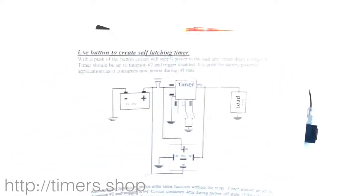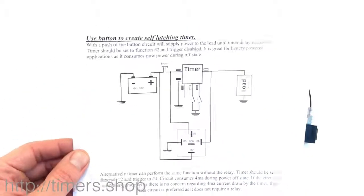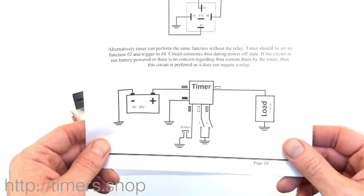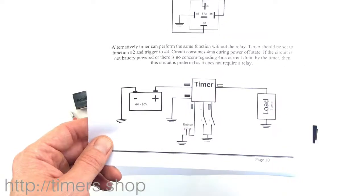In the prior examples we showed how to create a self-latching circuit with a button and a relay, and with a button connected to the trigger wire.